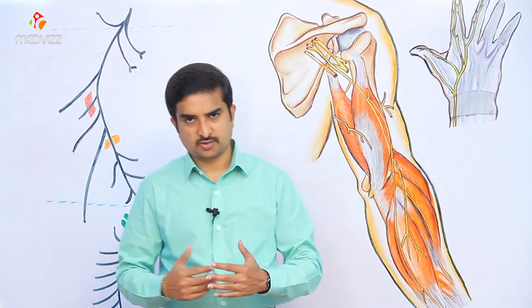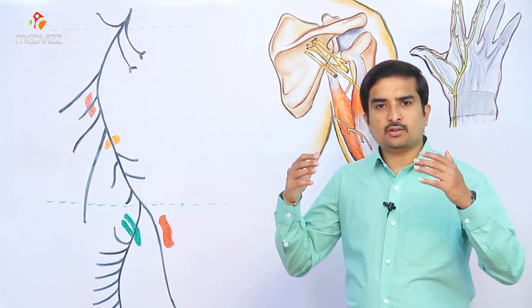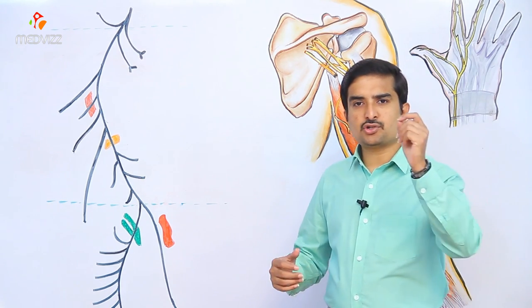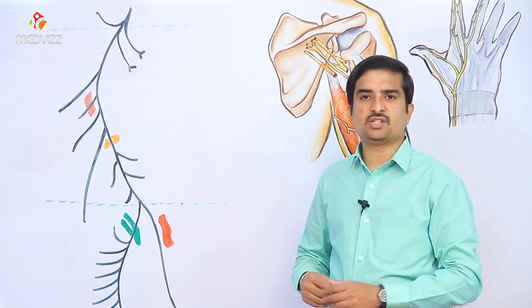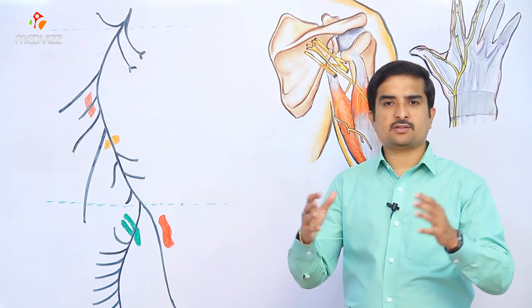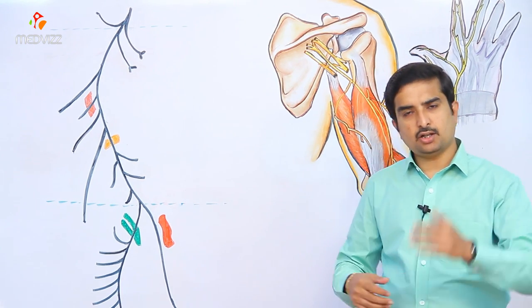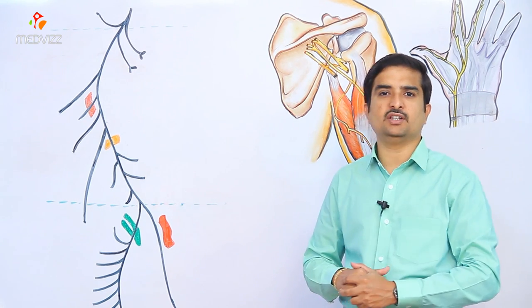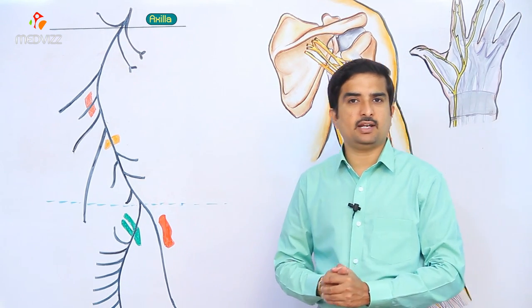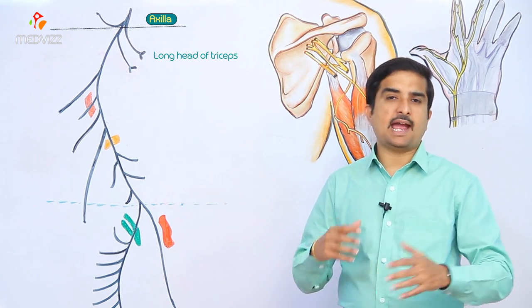Now let us concentrate on the anatomical course of this nerve. The radial nerve is a continuation of the posterior cord of the brachial plexus, containing fibers from all nerve roots C5 to T1. The nerve arises in the axillary region where it is situated posterior to the axillary artery and is related to the posterior wall of the axilla. Because of its most posterior course, it exits the axilla inferiorly via a triangular interval.